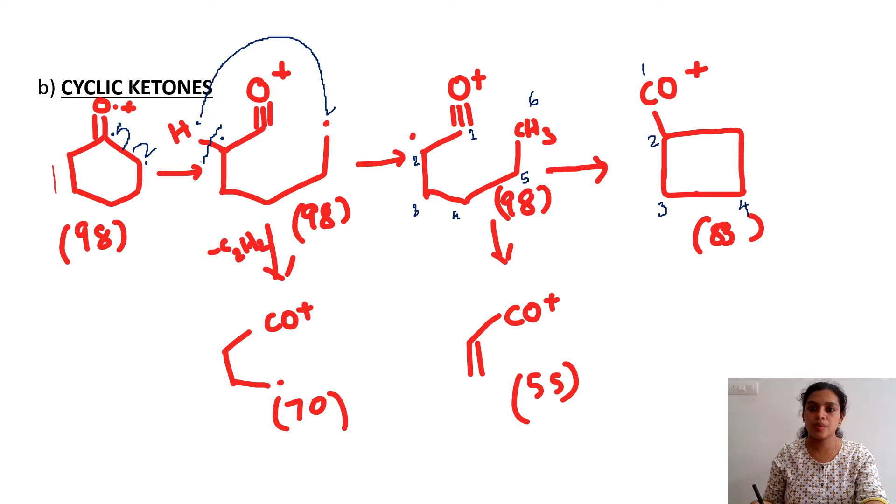From here to here, what might have happened? Fragmentation would have taken place like this to expel CH3 dot. CH3 dot is expelled and the resultant one is this one. There are five carbon atoms; the sixth methyl group is expelled. The m/z value is at 83.